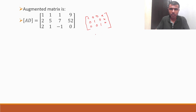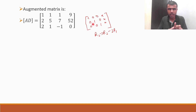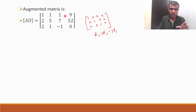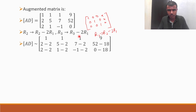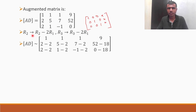My first operation is R2 ← R2 − 2R1. If I multiply R1 by 2, I get 2, 2, 2, 18. Then R2 − 2R1 gives: 2−2, 5−2, 7−2, and 52−18. Likewise R3 ← R3 − 2R1 — same operation. For R3: 2−2, 1−2, −1−2, and 0−18. Note that only R2 changes with the first operation and only R3 changes with the second.